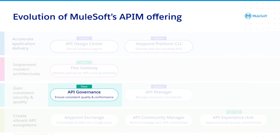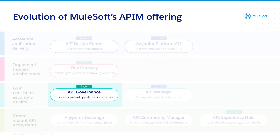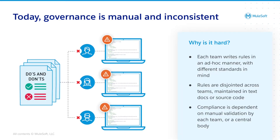Before we get stuck in, why do we need something like API Governance? Traditionally, governance has been a rather manual and inconsistent process, and I'm sure many of you have seen API specs that differ in standards even within the same team. First of all, it's not uncommon that each team defines their own rules, and to make matters worse, they create these rules with different standards in mind. For example, one team might have a strong rule set around security but not much guidance around API design best practices, while another team have defined a robust set of rules for API design, and security has maybe fallen down the priority list.